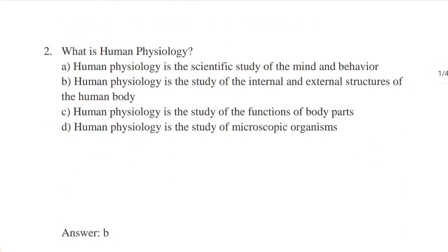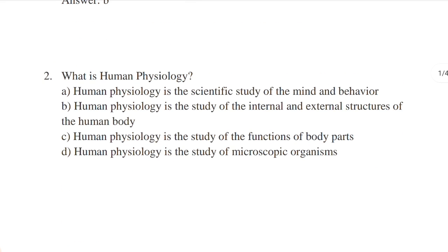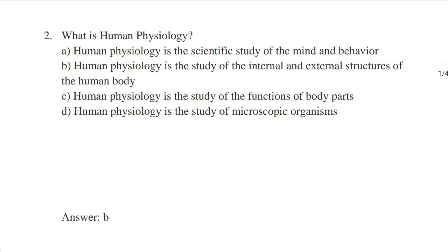Next question: what is human physiology? Options include: study of mind and behavior, study of internal and external structures of the human body, study of functions of body parts, and study of microscopic organisms. Study of internal and external structures is anatomy. Study of functions of body parts is known as human physiology. Answer: option C — study of functions of body parts.